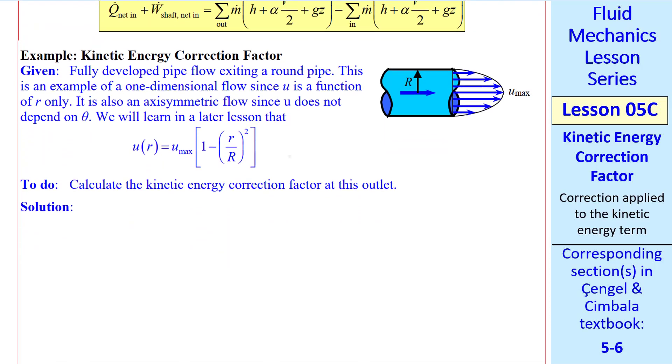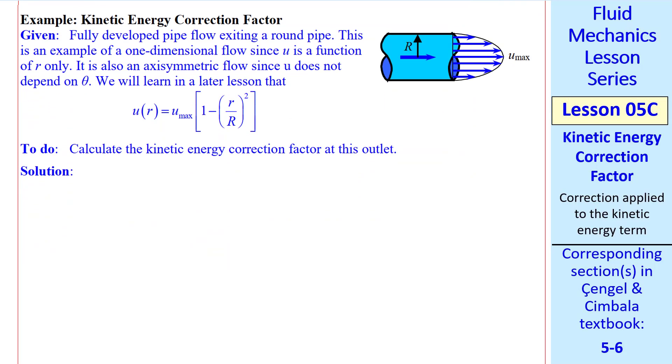Now I'll do an example where we can calculate this kinetic energy correction factor. Suppose we have fully developed pipe flow, where the profile is parabolic as sketched here. It's a one-dimensional flow, since once it's fully developed, this profile shape does not change as you keep going down the pipe. If our control volume slices across this outlet, we would need to calculate a kinetic energy correction factor for this outlet.